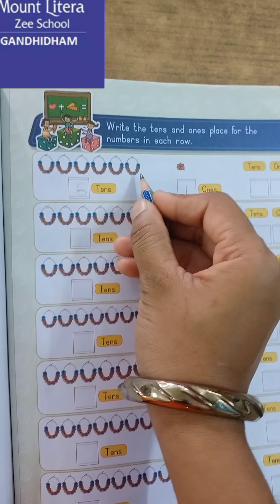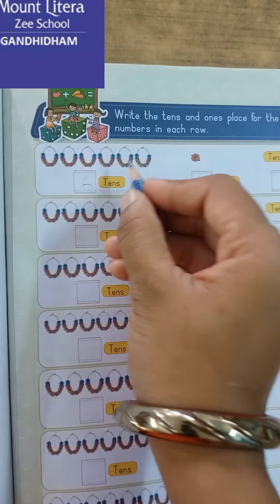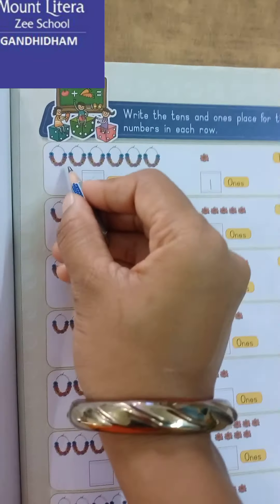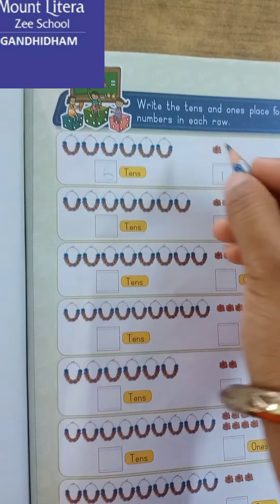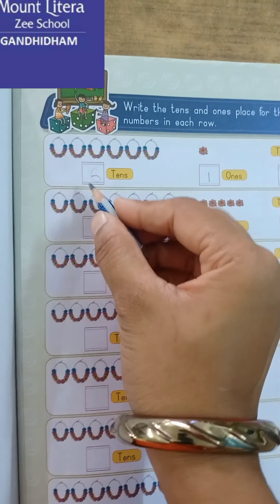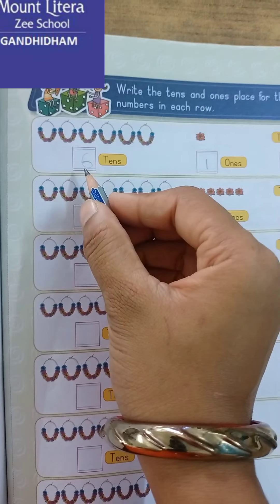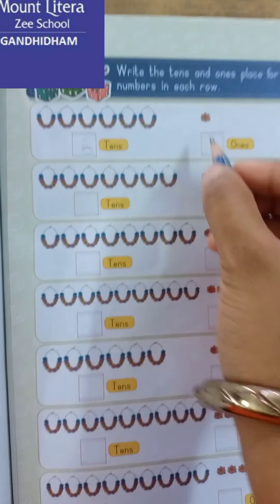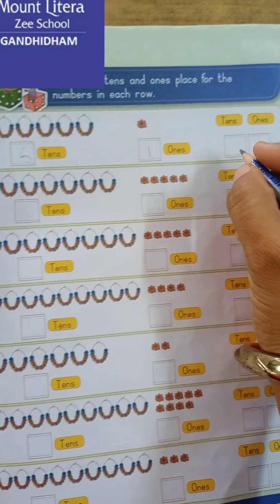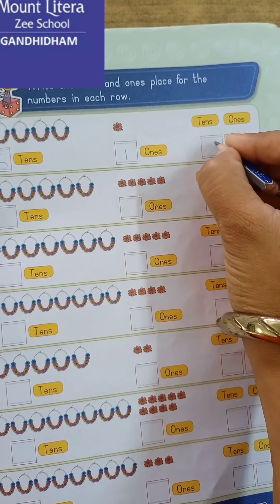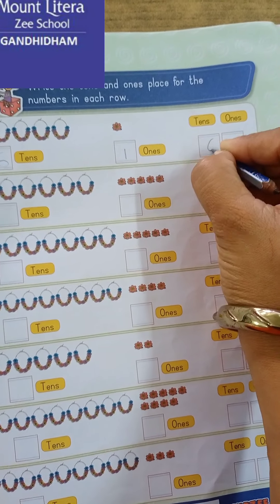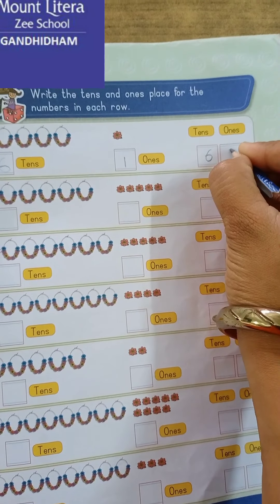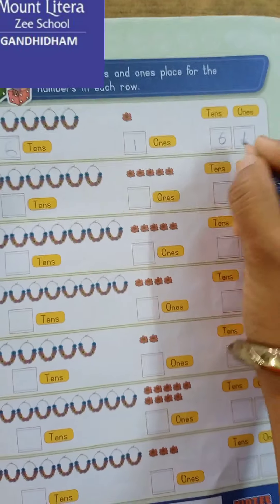Pahle joh diye huye objects hain usko count karenge. Aur counting ke baad joh number hamay milega woh ham is box mein likhhenge. So we have to write here six and one. And here tens mein ham six likhhenge, and ones ke place pe one likhhenge.